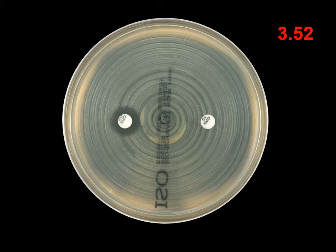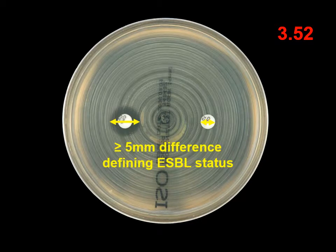Going back to an earlier image, taken less than four hours after incubation, the ESBL status of the organism can be determined by comparing the zone diameters to the two discs. An ESBL-producing organism, as in this instance, is defined by the zone diameter to Kefpidoxine plus clavinic acid being 5 mm or more greater than Kefpidoxine alone.